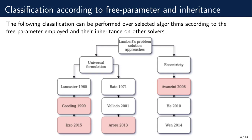Our selection of the algorithms is based on previous performance comparisons made by Klump and Sangrin. We also considered those algorithms which have never previously been compared against other solvers. The selected algorithms were Gooding 1990, Avanzini 2008, Arora 2013, and Izzo 2015. Gooding 1990 inherits from Lancaster 1960 and Klump's analysis shows it to be the most robust and accurate of its days. Izzo introduced a new algorithm based on Lancaster's Formulation II, and Izzo 2015 is known to have high performance.